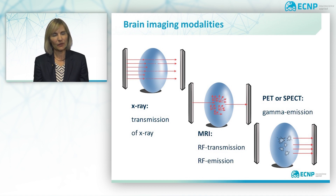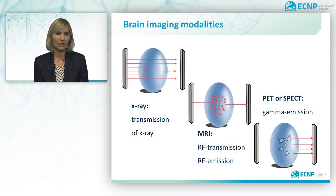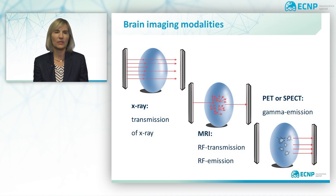The strong magnetic field in the MRI scanner aligns the protons in the body — we call this a spin. On top of this, the MRI scanner also produces a radiofrequency current that creates a varying magnetic field. The protons absorb the energy from the magnetic field and flip their spins. When the field is turned off, the protons gradually return to their normal spin, and this return process produces a radio signal that can be measured by receivers in the scanner and made into an image.